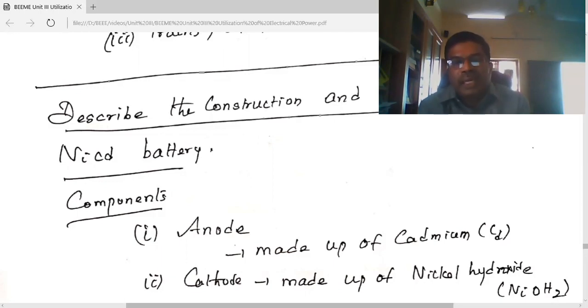When we use electrical energy, chemical energy is converted into electrical energy. When we charge, electrical energy is converted into chemical energy. Basically, a battery has anode, cathode, and electrolyte. The materials used classify the battery.